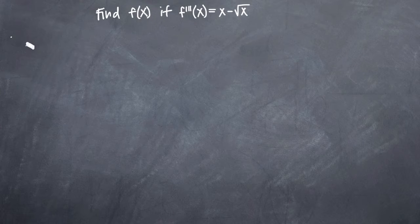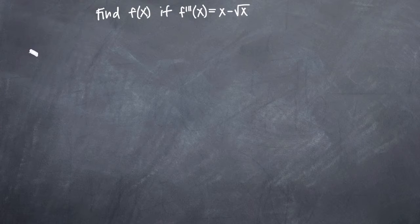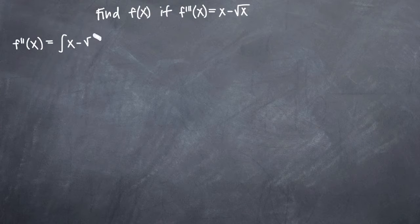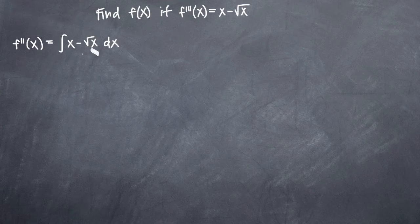We'll start with the third derivative of x and try to find the second derivative of x. Once we've found it, we'll find the first derivative, and then use the first derivative to find the original function. So we'll start with the third derivative of x, and in order to find the second derivative, f double prime, we'll need to take the integral, or the antiderivative, of the third derivative: x minus the square root of x, with dx notation.